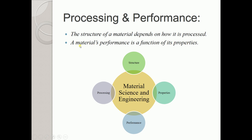A material's performance is a function of its properties, so you can improve or upgrade the performance of a material by changing the properties. To summarize the entire subject: material science and engineering consists of four components — structure, properties, processing, and performance. Material science covers structure and properties; materials engineering covers processing and performance. See you in the next lecture.